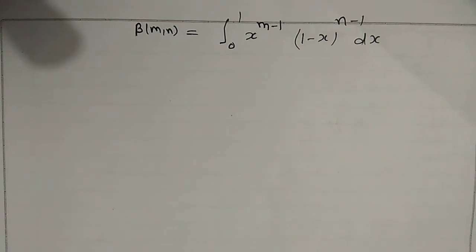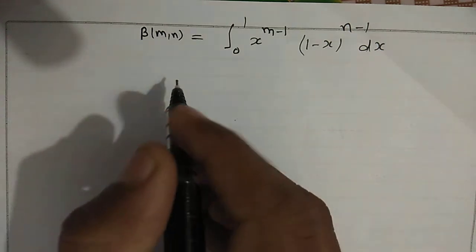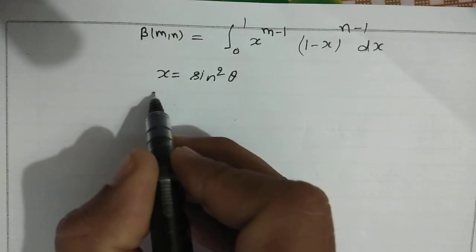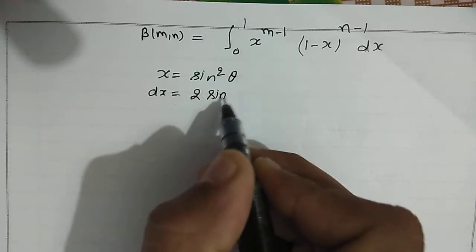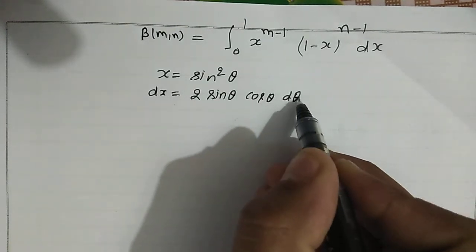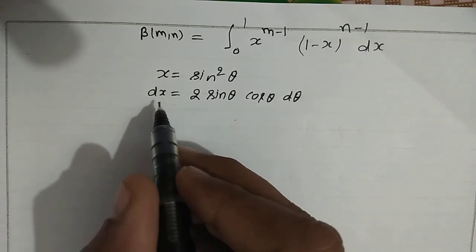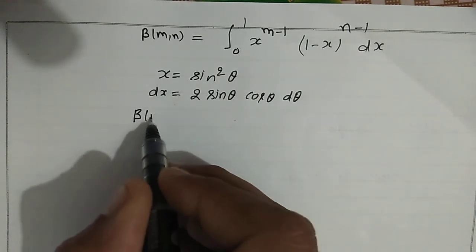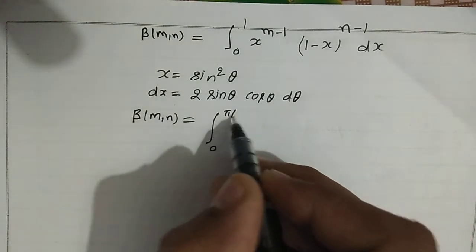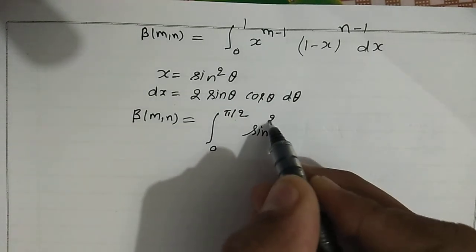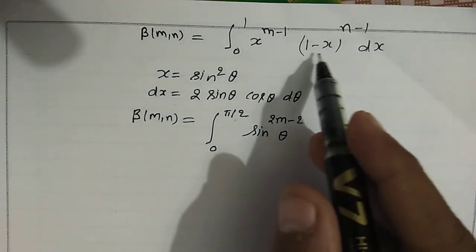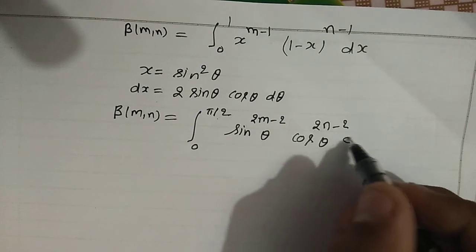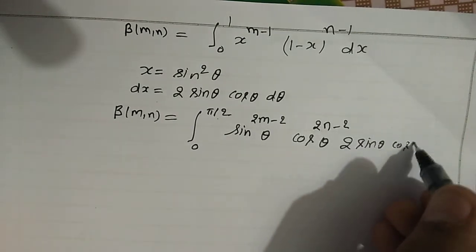Now let us express the beta function in terms of sine and cosine. Let us substitute x equal to sin²θ, so dx equals 2 sinθ cosθ dθ. The limits become: when x equals 0, θ equals 0, and when x equals 1, θ equals π/2. The beta function beta(m, n) then becomes the integral from 0 to π/2 of sin^(2m-2)θ times cos^(2n-2)θ times 2 sinθ cosθ dθ.